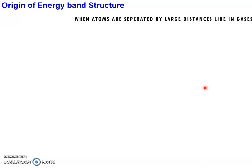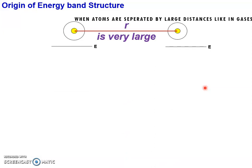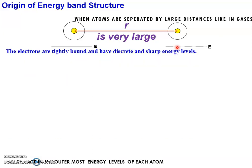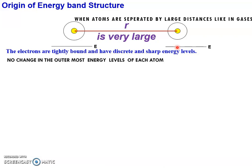If you take atoms separated by a large distance, like in gases — where R indicates the interatomic distance between one atom and another atom — and you observe the outermost energy level of an atom (since all inner energy levels are tightly bounded except the outermost), whenever this interatomic distance is very large, all atoms have the same energy and this energy is very sharp and discrete. There is no variation in the outermost energy level due to another atom.